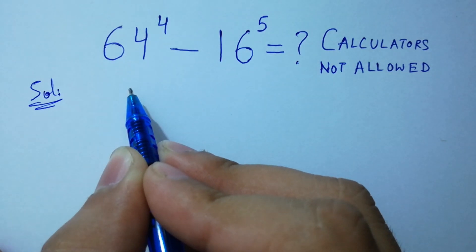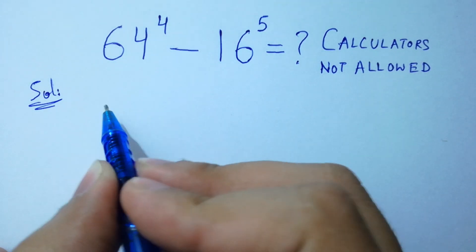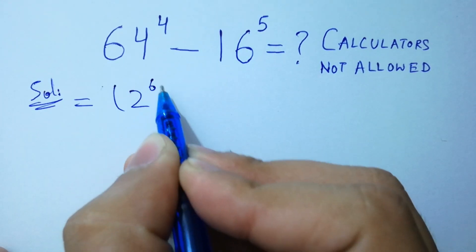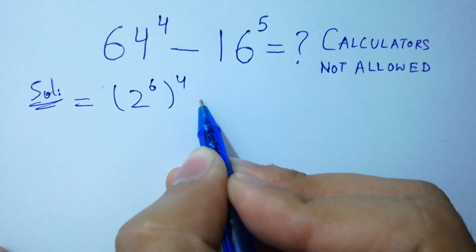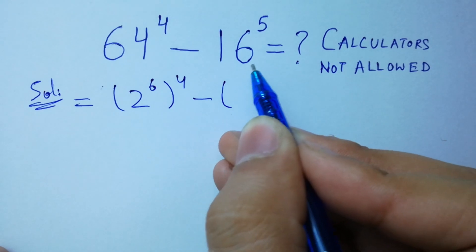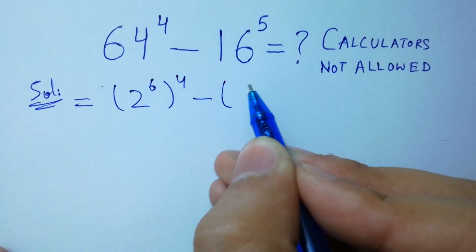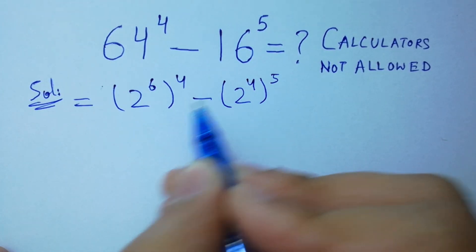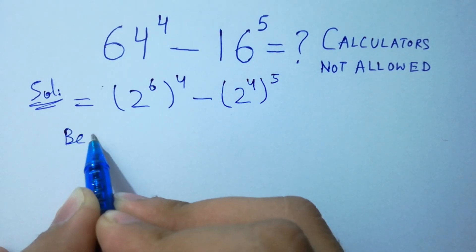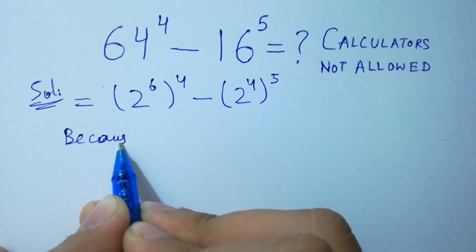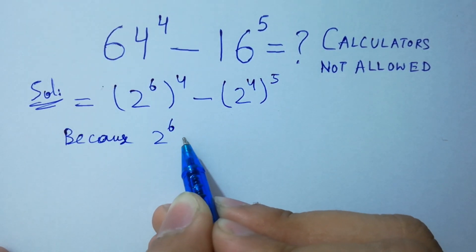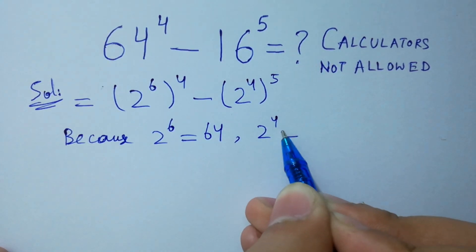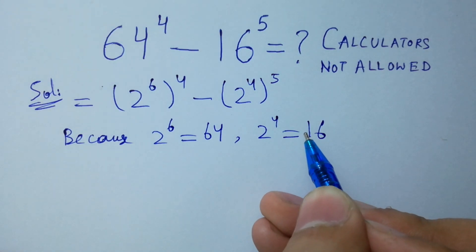64 to the power 4 is the same as 2 to the power 6, to the whole power 4, minus 16 to the power 5, which is the same as 2 to the power 4, to the whole power 5, because 2 to the power 6 equals 64 and 2 to the power 4 equals 16. I hope you understood.